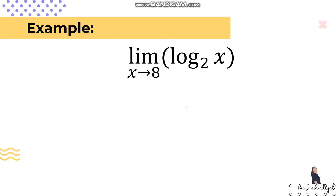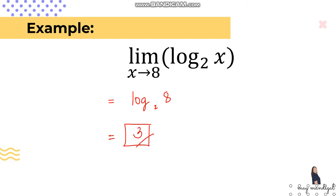Let's identify the limit of log base 2 of x as x approaches 8. Since this is a logarithmic function, we do direct substitution: log base 2 of 8. In logarithms, we identify what exponent to apply to the base to arrive at the argument. Since 2 raised to 3 equals 8, the answer is 3. Therefore, the limit of this function as x approaches 8 is equal to 3.